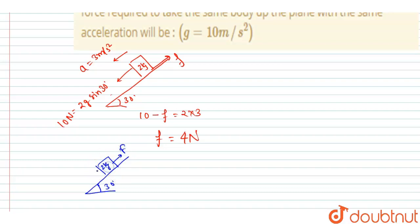This is 2 kg, and here this 10 Newton will act, and the friction force 4 Newton will act. Right? And we want this block to move with an acceleration of 3 m/s² in the upward direction.